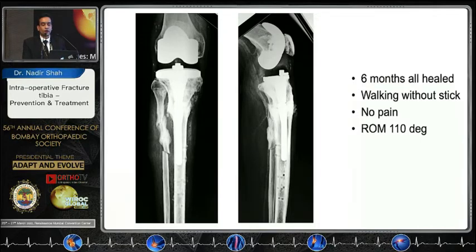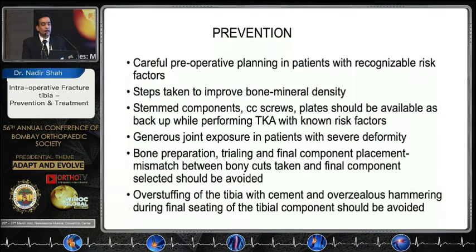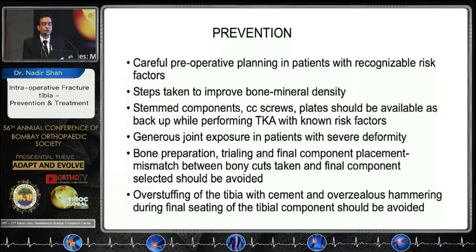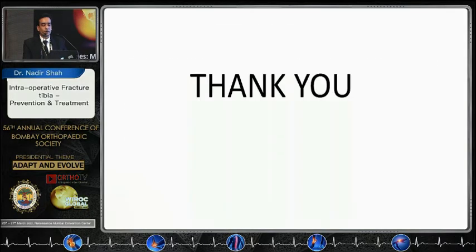Prevention requires careful preoperative planning in patients with recognizable risk factors, and steps to improve bone mineral density. Stem components, cancellous screws, and plates should be available as backup when performing total knee arthroplasty with known risk factors. Generous joint exposure in patients with severe deformity is essential. Mismatch between bone cuts and final component sizing should be avoided, as should overstuffing of the tibia with cement and overzealous hammering during final seating of the tibial component.